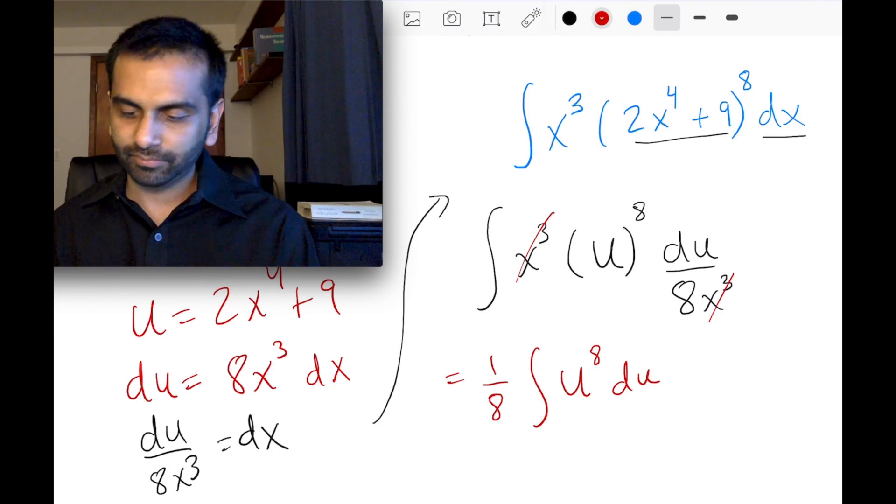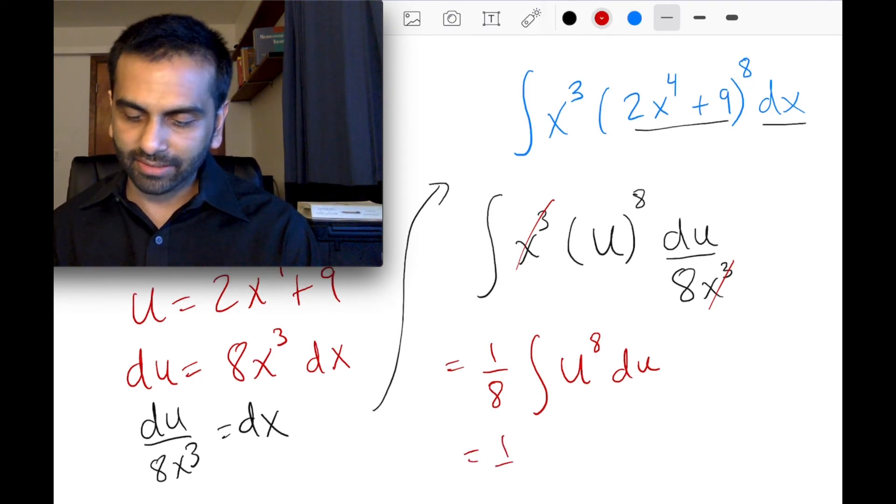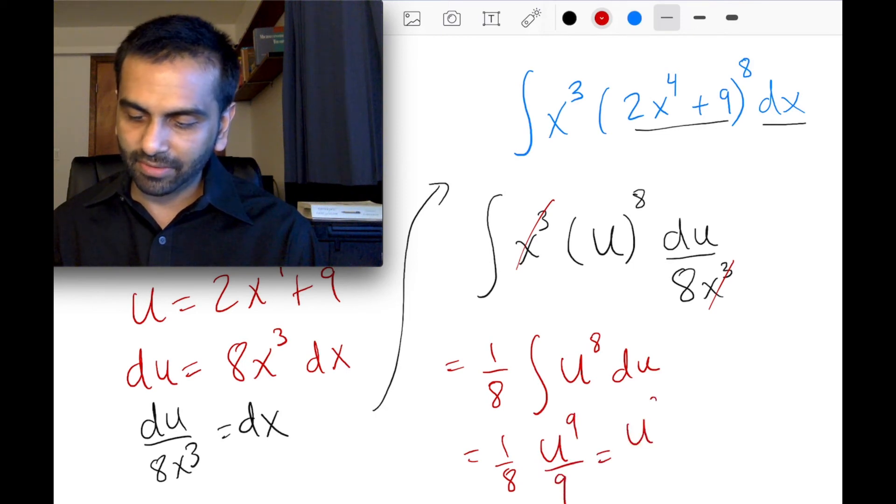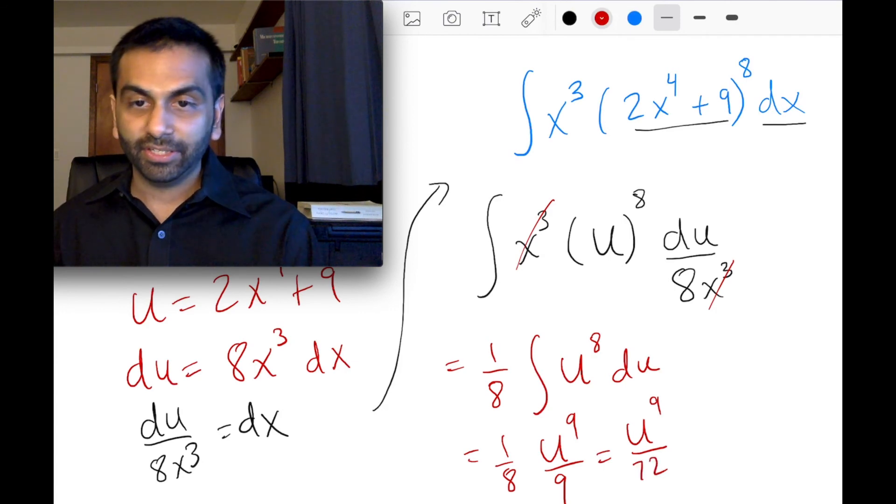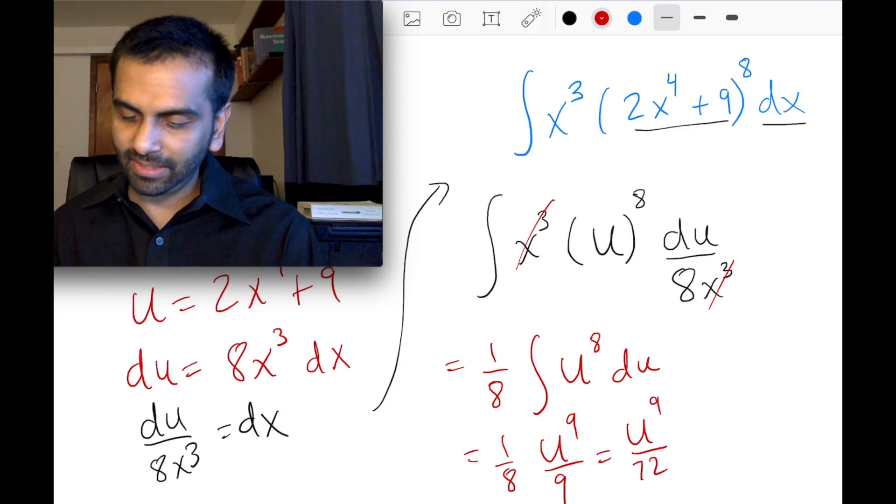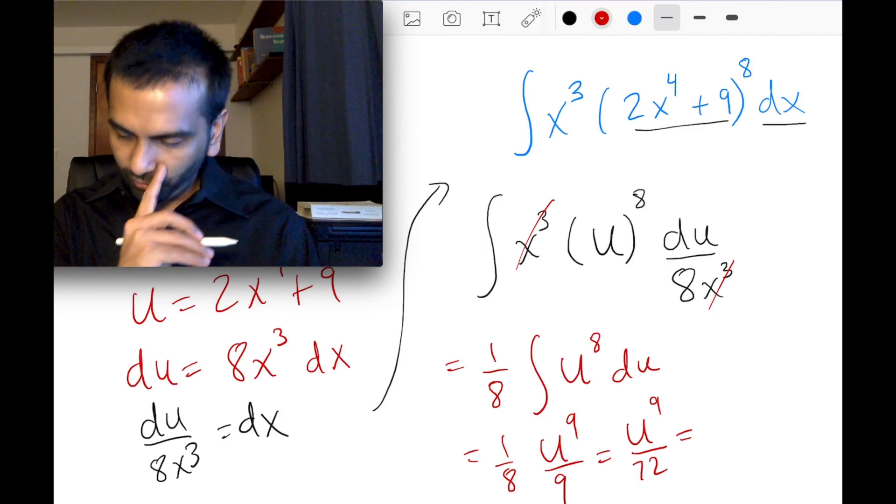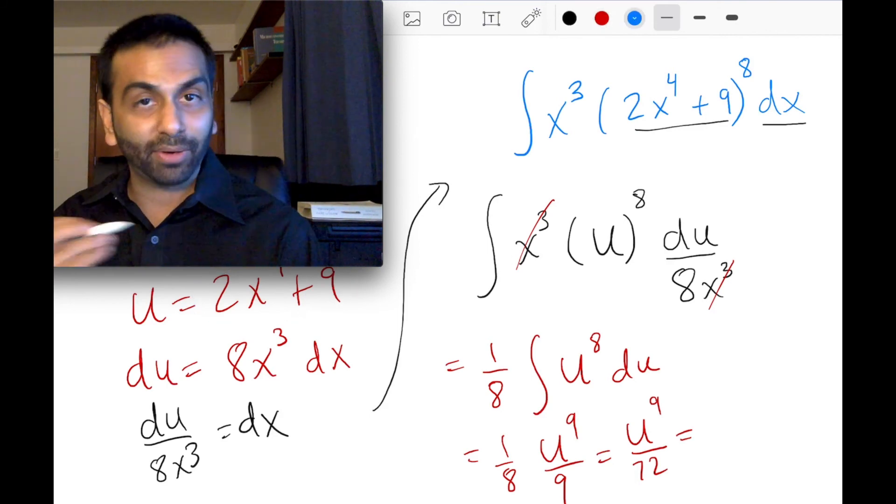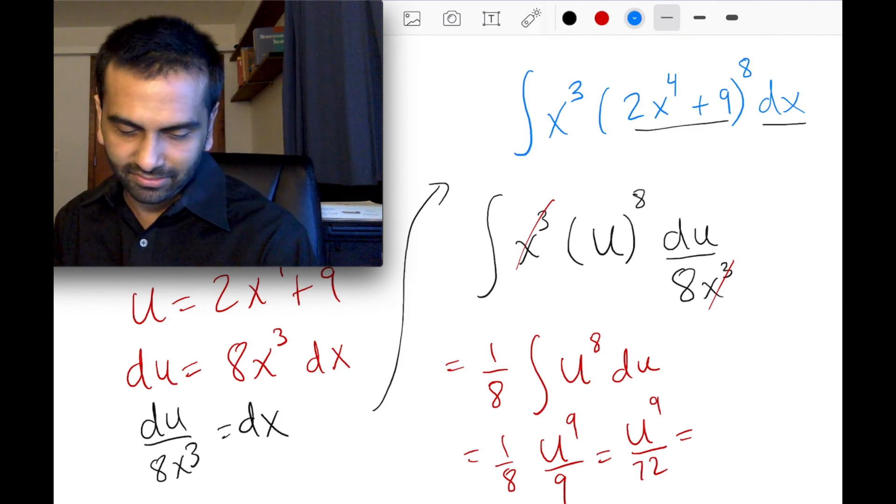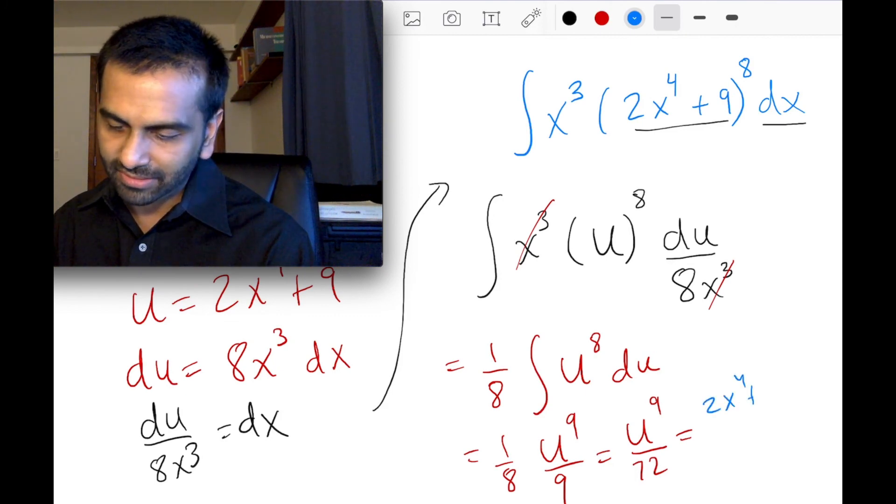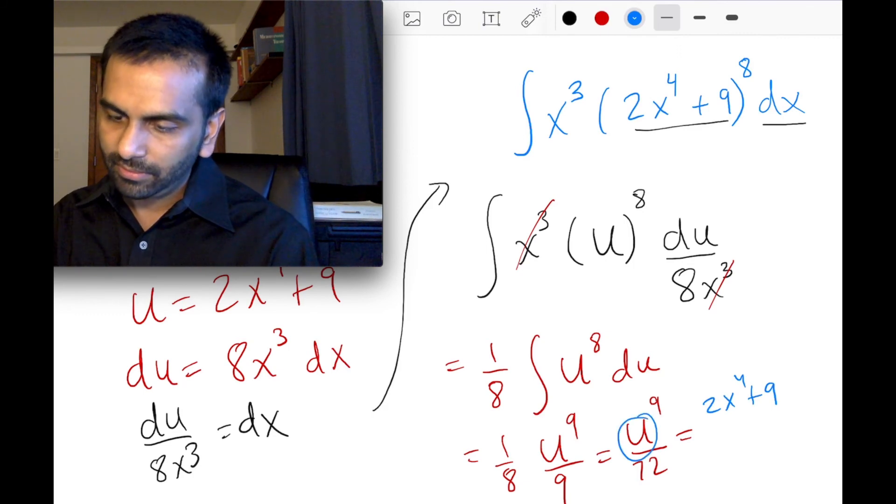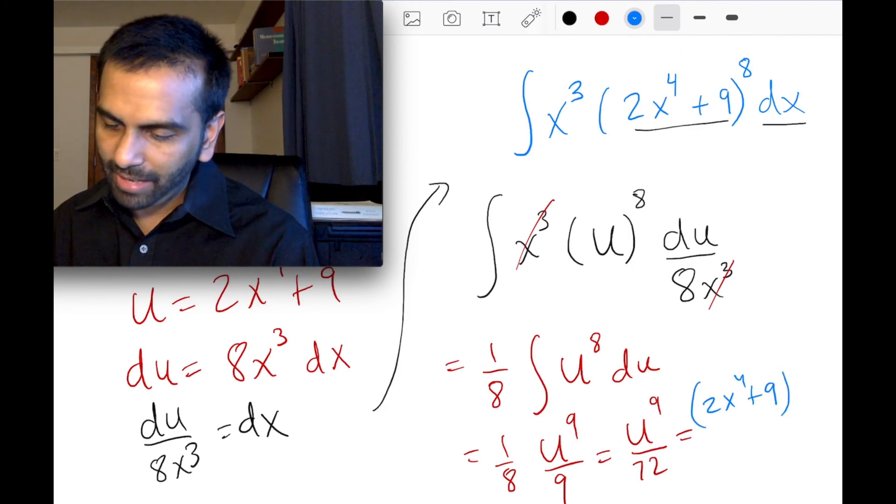And so now, now I can easily integrate this. So the 1/8th can just stay there, and the integral of u to the 8th power is u to the 9th power over 9. Again, I could simplify this as u to the 9th power over 8 times 9 is 72. So, u to the 9th power over 72, and technically plus c. But I could, before that, I could just substitute out what the u really was if I want to report my final answer with x's. And so that's going to be 2x to the 4th plus 9. That's what my u is. So that to the 9th power divided by just the number 72 plus c. So that would be your answer.